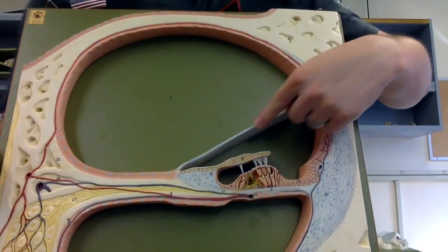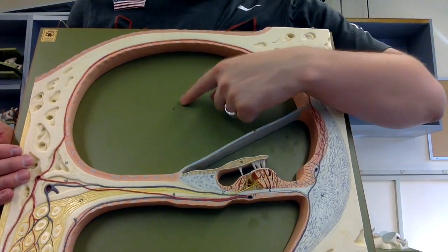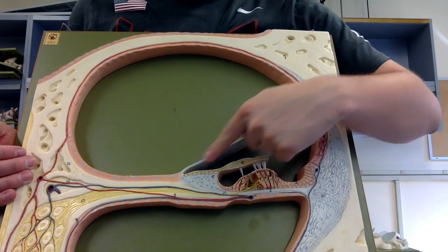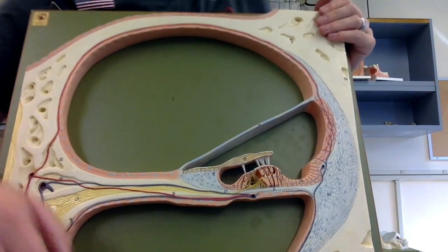Then you have the vestibular membrane up top here, separating out the scala vestibuli, or vestibular duct, from the cochlear duct. So this is the vestibular membrane. All right, that should be it.